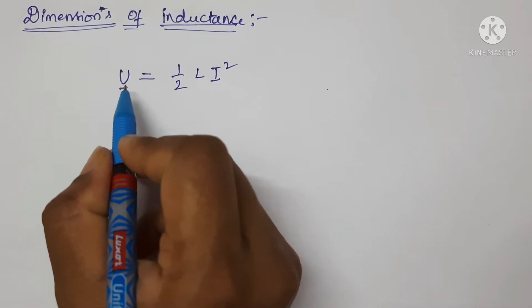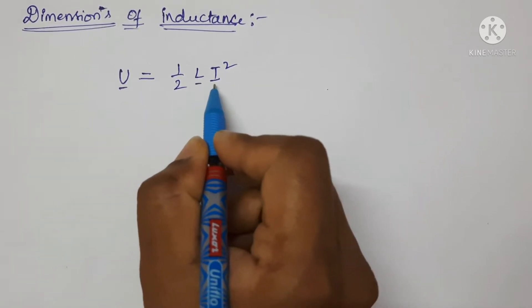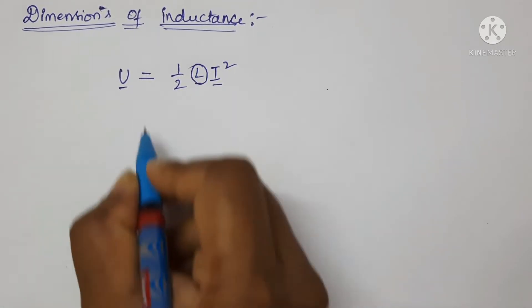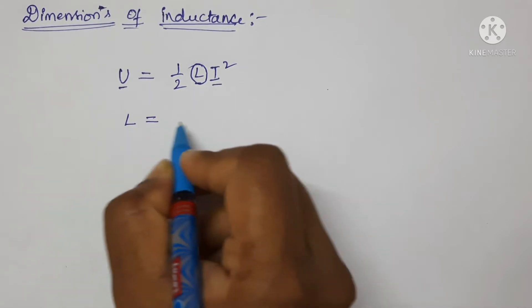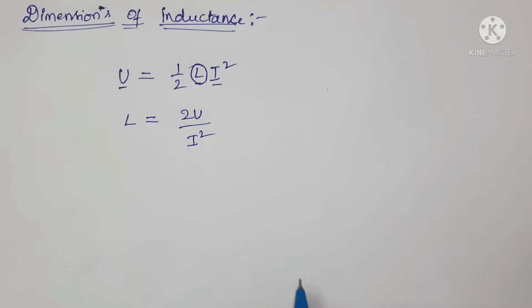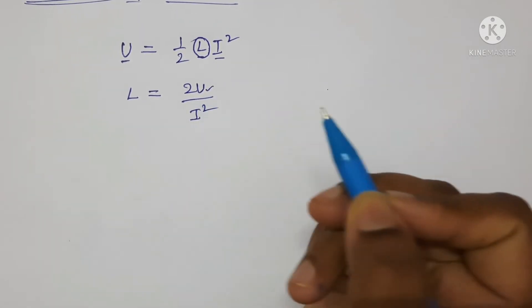Now we want the inductance, so the formula for inductance L is equal to 2U upon I squared. Here we have to find the dimensions for energy.